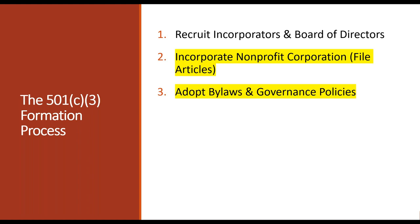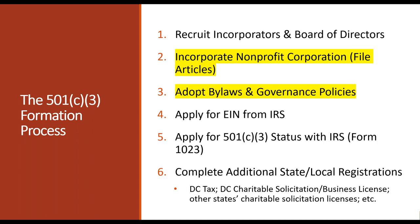Let's look at where articles and bylaws come in the 501(c)(3) formation process. Your very first step is to recruit incorporators — the people who will actually file the articles of incorporation — and an initial board of directors. Nonprofits in DC and most other jurisdictions need at least three people on a board to be a functioning nonprofit. So before you file any paperwork, you should have at least three people lined up to serve on the initial board.